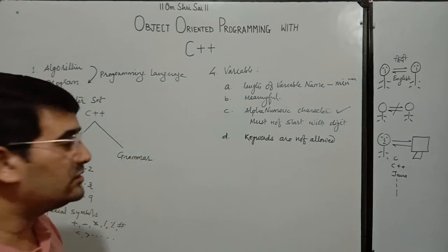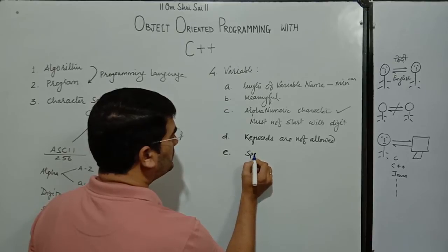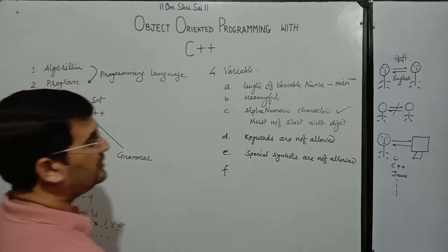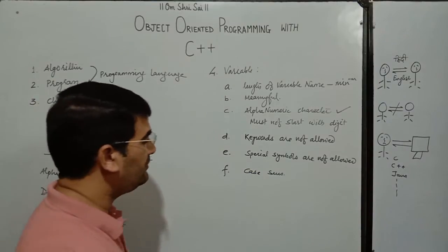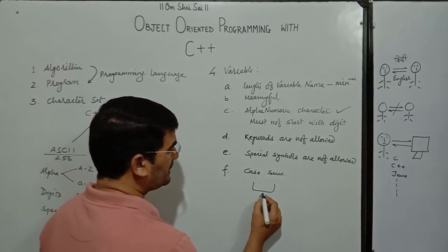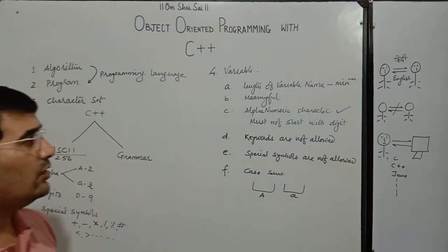Means the keywords cannot be used as the variable names. The next is special symbols are not allowed. And the last rule is it is case sensitive. Case sensitivity means we can have a variable with name as capital A. So, we can have another variable with name as small a.